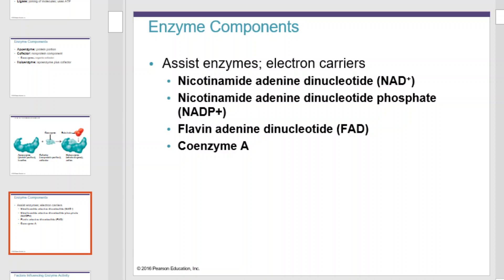Some enzymes, such as NAD, NADP, FAD, and coenzyme A, are assisting enzymes. They can carry electrons from one place to another. NAD is used in cellular respiration. NADP is used in photosynthesis. FAD is used in cellular respiration. And coenzyme A is used in cellular respiration.